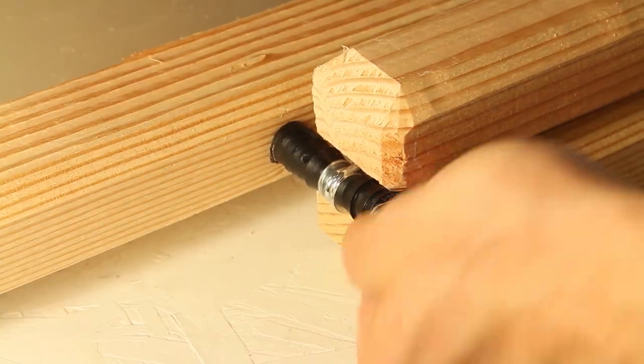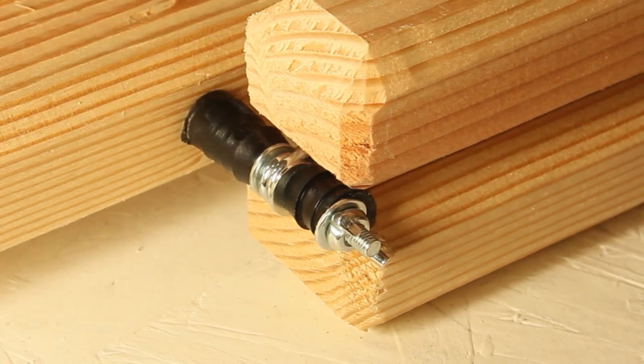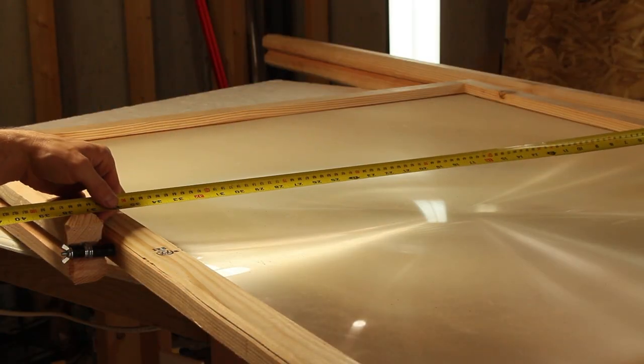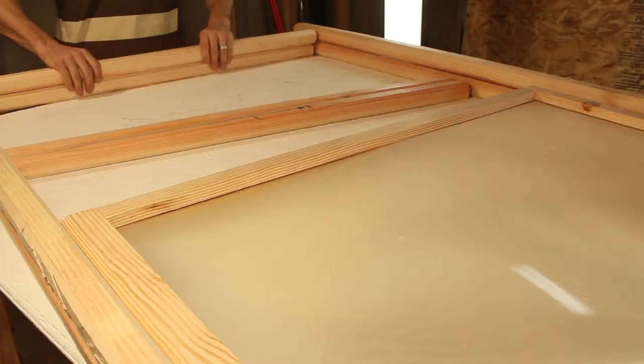Everything's duplicated on the other side, and these frame legs pivot just the way I was hoping. Next, we'll need to measure the distance between the legs and cut 4 more pieces of wood to act as support braces.